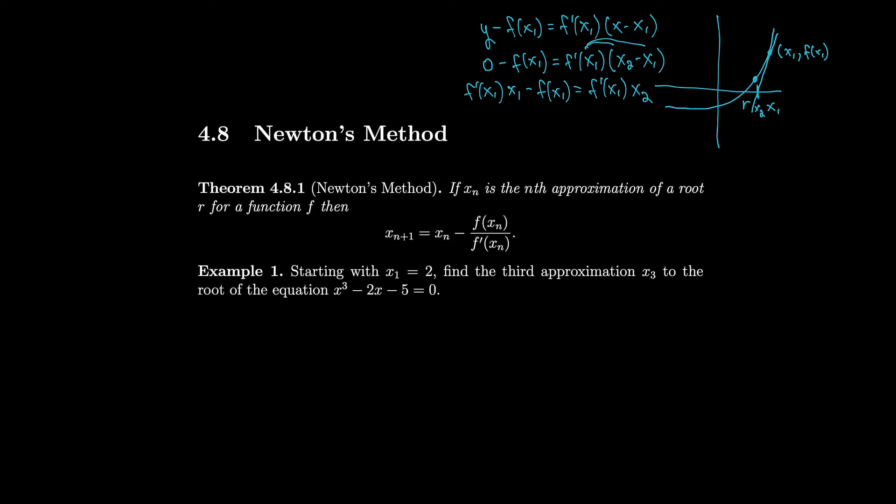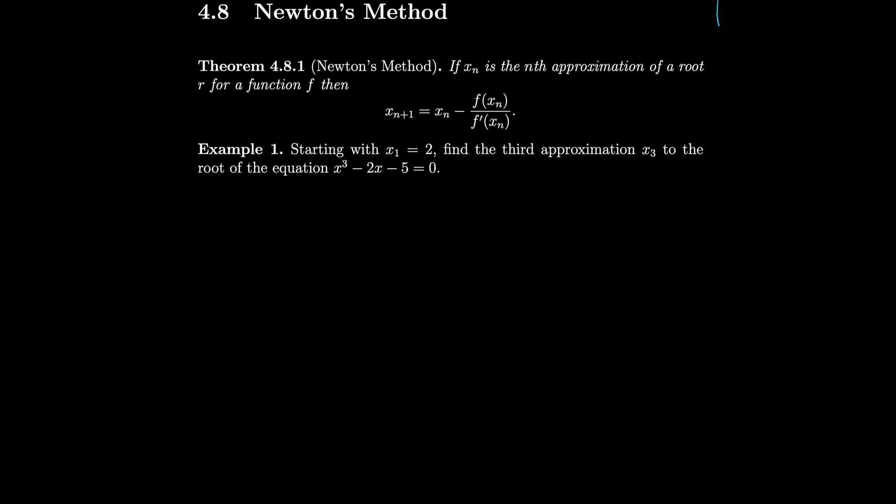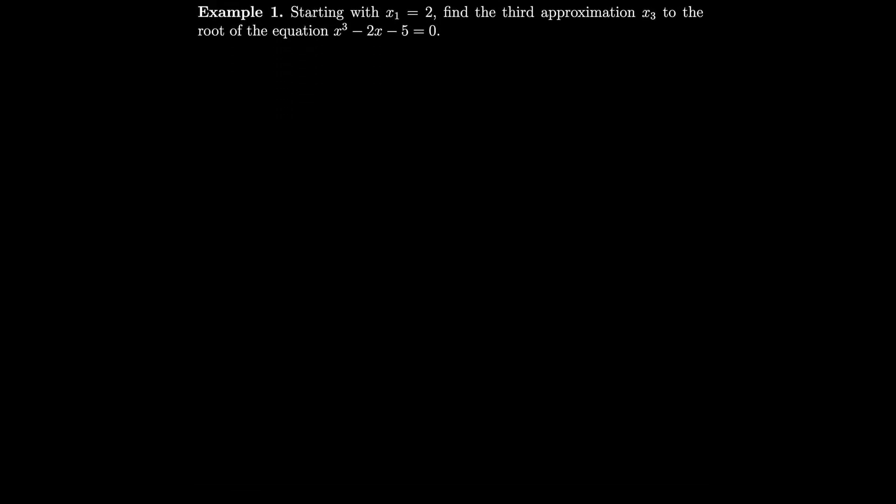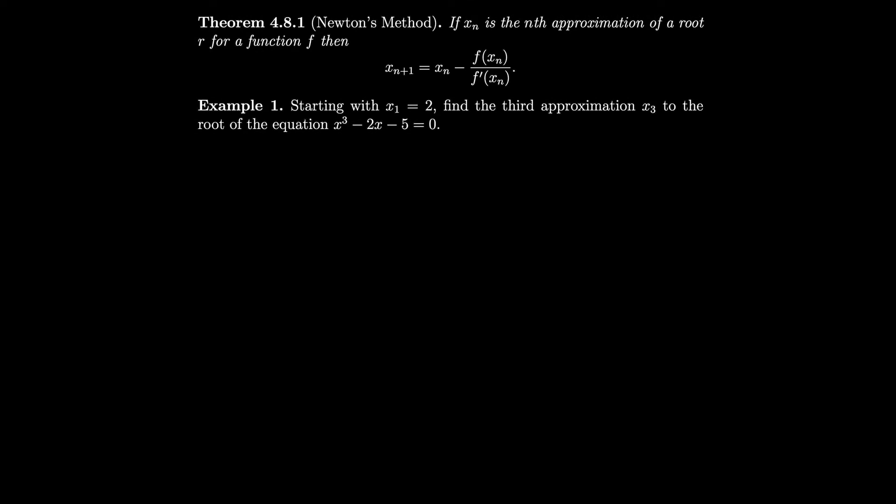Let's do an example of this. We'll start with x₁ = 2 and try to find the third approximation x₃ to the root of the equation x³ - 2x - 5 = 0. This is actually the polynomial that Newton chose to illustrate his method. By the way, notice that we're dividing by the derivative. So if the derivative is zero, the method fails. If the derivative is near zero, the method can also fail. So you do have to be careful in certain situations.